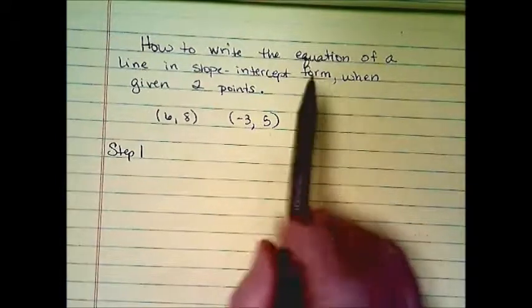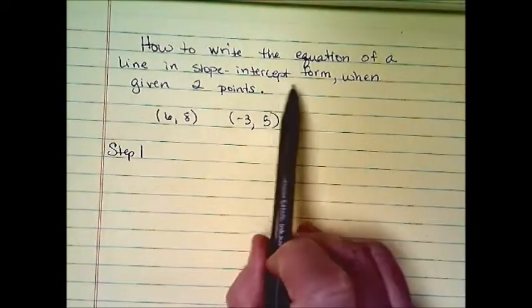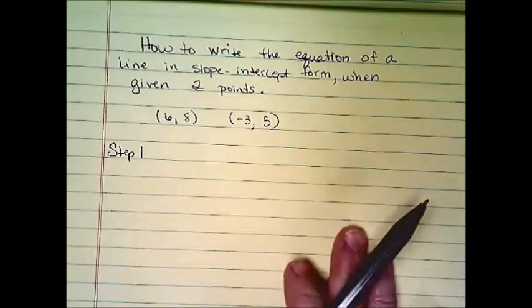Okay, how to write the equation of a line in slope-intercept form when given two points.